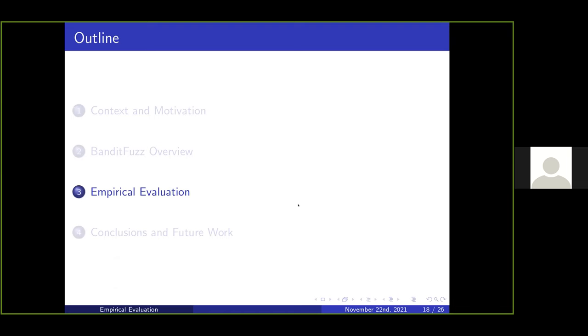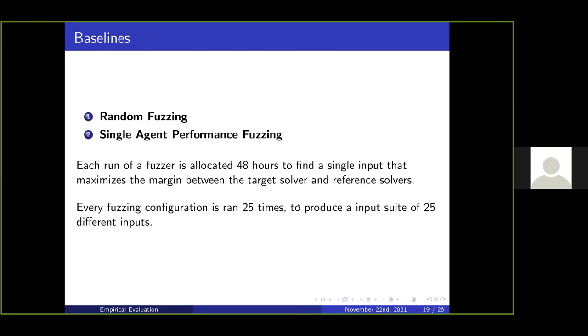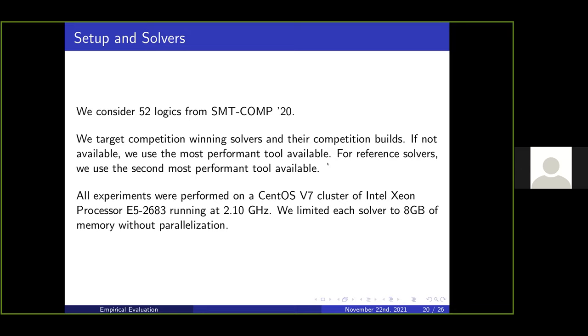Let me go into the empirical evaluation. We consider two baselines: first, random fuzzing, and second, a single agent performance fuzzer. The way we do this is we run each fuzzer for 48 hours and the output is a single benchmark to maximize the performance margin. We repeat this process 25 times to produce an input suite of 25 different inputs for a particular logic. We do this for 52 logics from SMT-COMP 2020. We target the competition winning tool, trying to make the best known tool slow on a benchmark suite. If the best solver isn't available or runnable, we use the second most available tool.